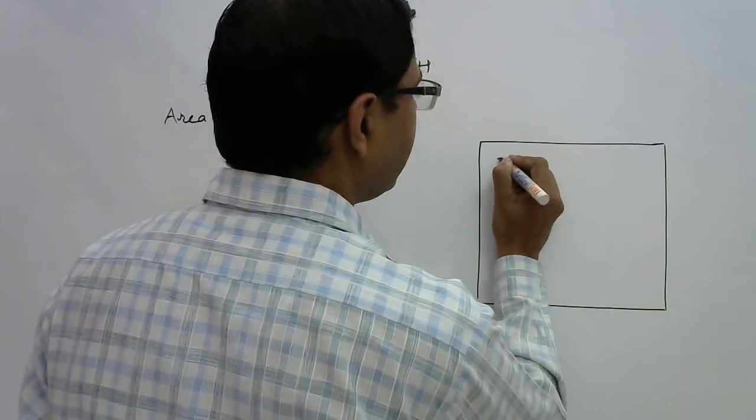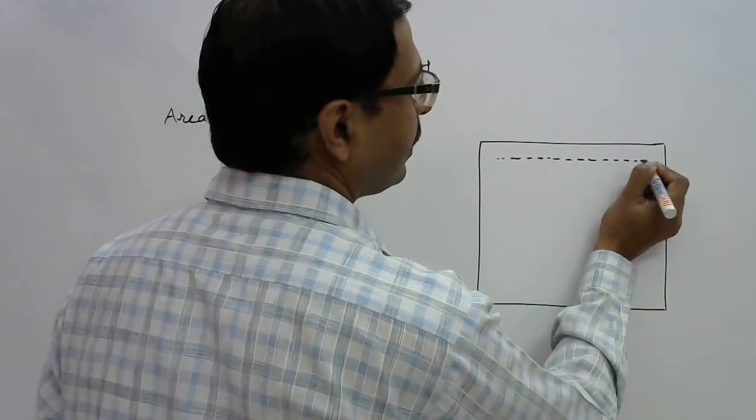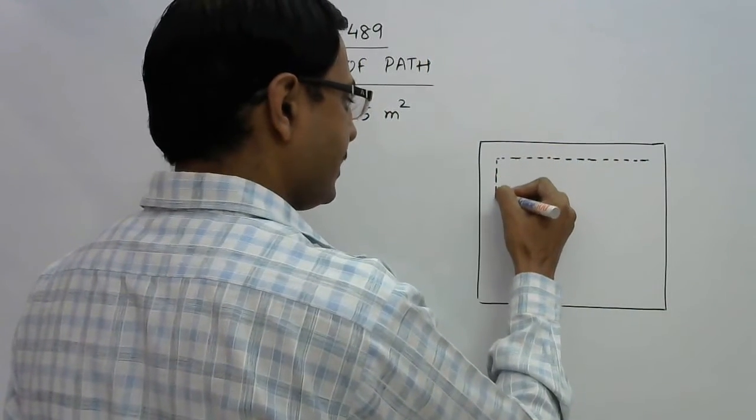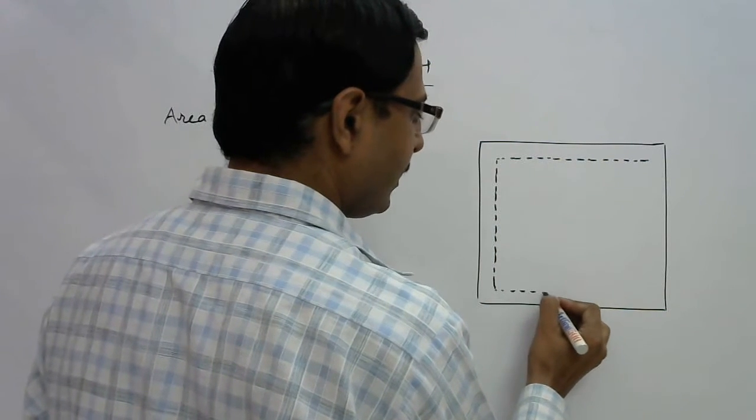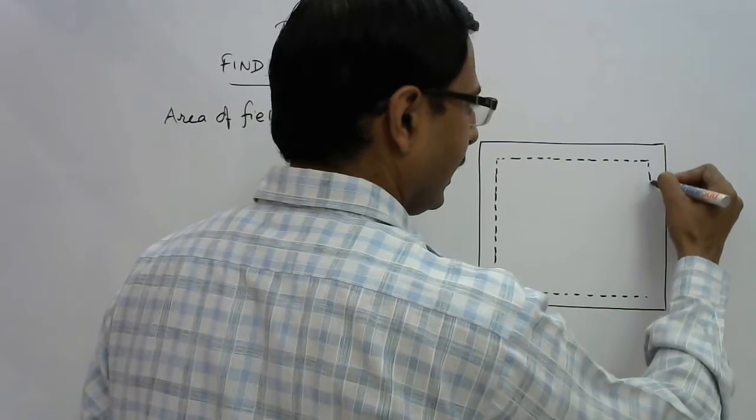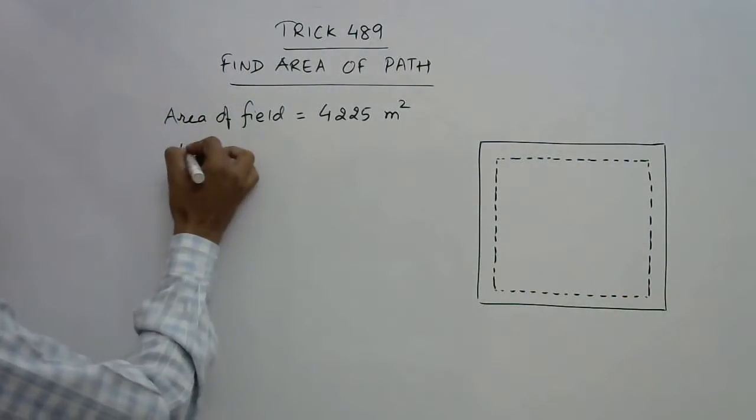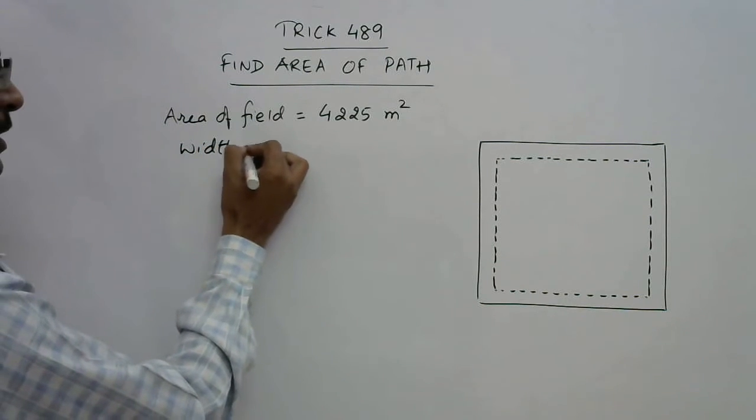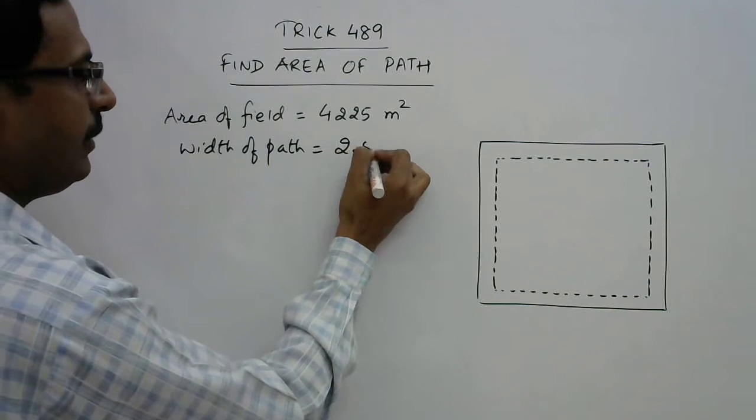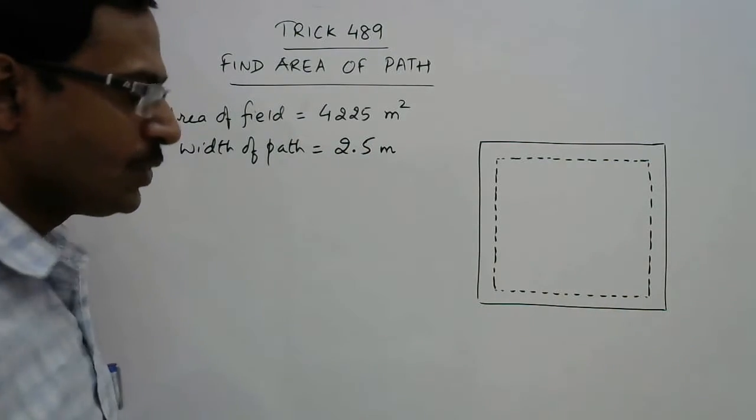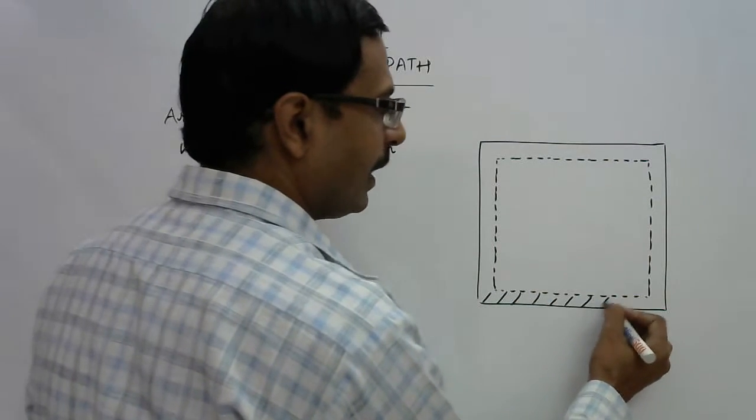The area of this entire square field is given and now we are given that there is a path inside the boundary, and the width of this path is given as 2.5 meters. We need to find out the area of this path.